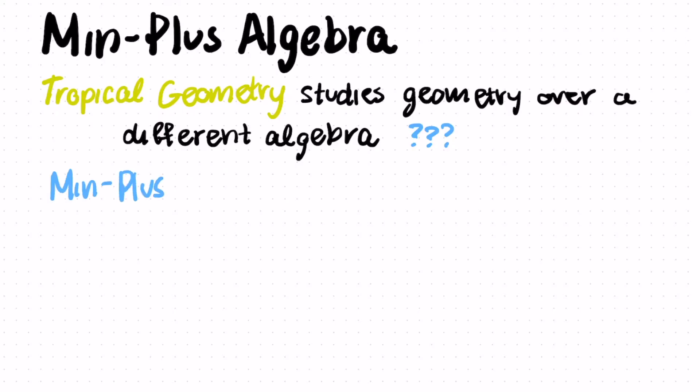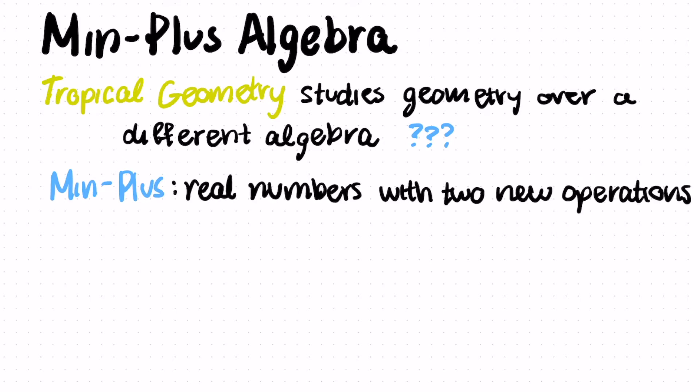In regular algebra, you have the operations of addition and multiplication. And in tropical geometry, we're going to look at the min plus algebra, which has two new operations. So we're going to take the real numbers and give them a new version of addition and a new version of multiplication. Tropical addition is just taking the minimum of two numbers. So a tropical plus b is just equal to the minimum of a and b.